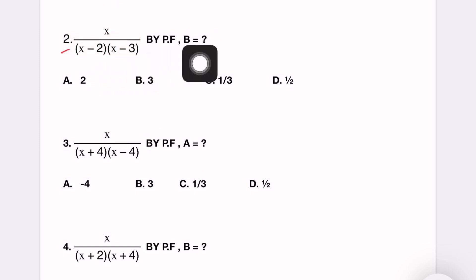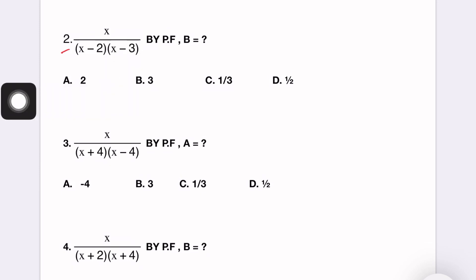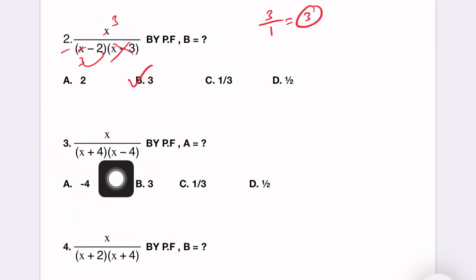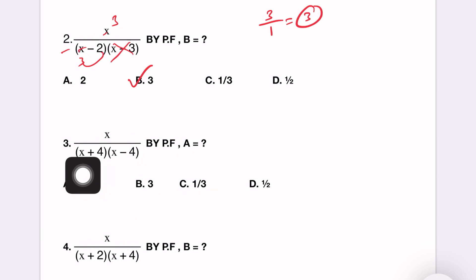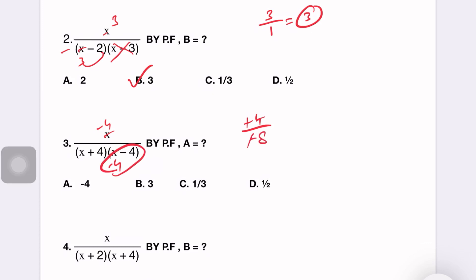By partial fraction, B is found using x equals 3 from x minus 3 equals 0. Substituting x equals 3: 3 by (3 minus 2) equals 3 by 1 equals 3. Option B is the answer. Next question: x by (x plus 4)(x minus 4) by partial fraction, find A. First factor: x equals minus 4. Substituting: minus 4 by (minus 4 minus 4) equals minus 4 by minus 8. Minus signs cancel, giving 1 by 2. Option D is the answer.